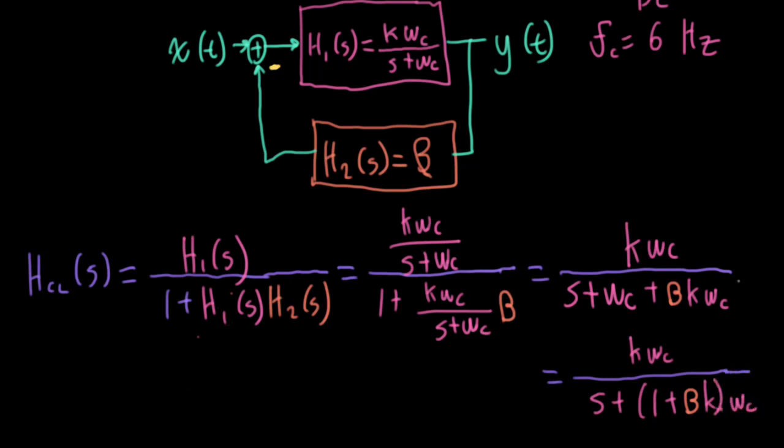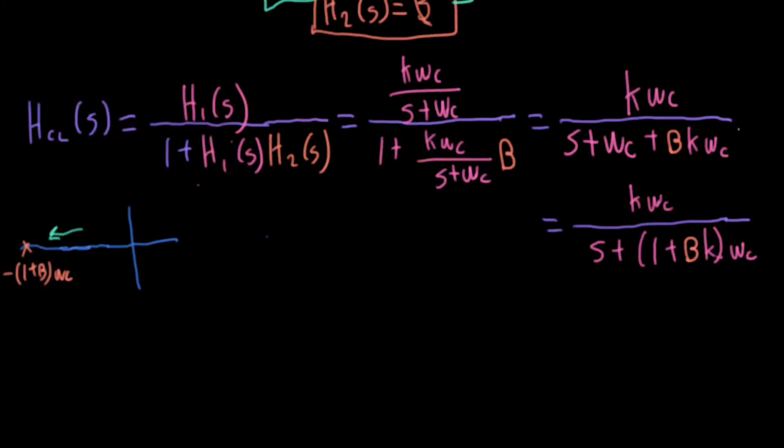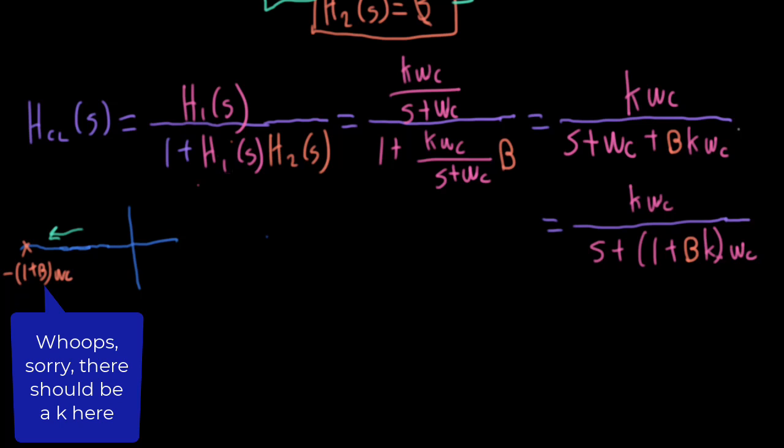So basically what we've done is we've moved the pole. I had a pole that was originally sitting at minus Omega C, and it's moved out. So we now have a new pole that's sitting at minus 1 plus beta K Omega C. So this is squooshed out, and we've improved the bandwidth. We have a new cutoff frequency that's increased by a factor of 1 plus beta K.